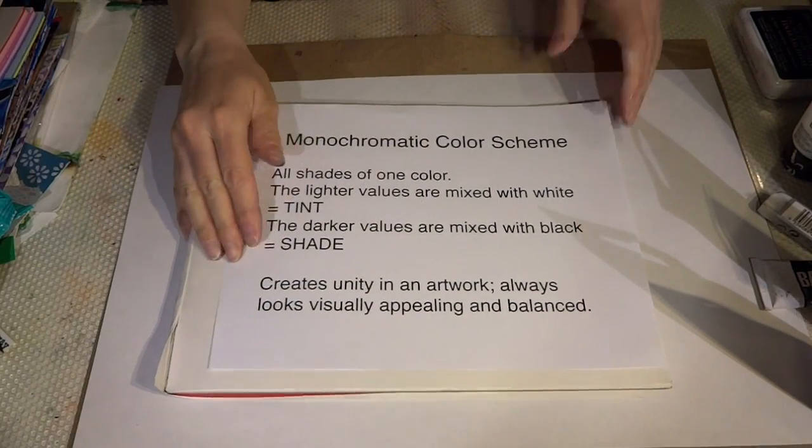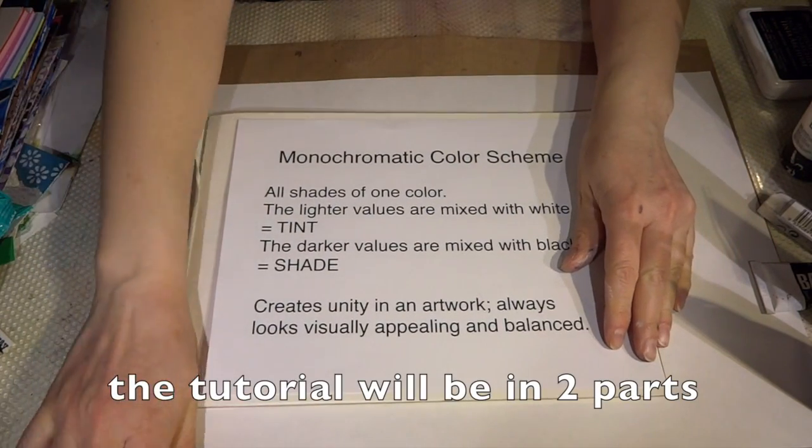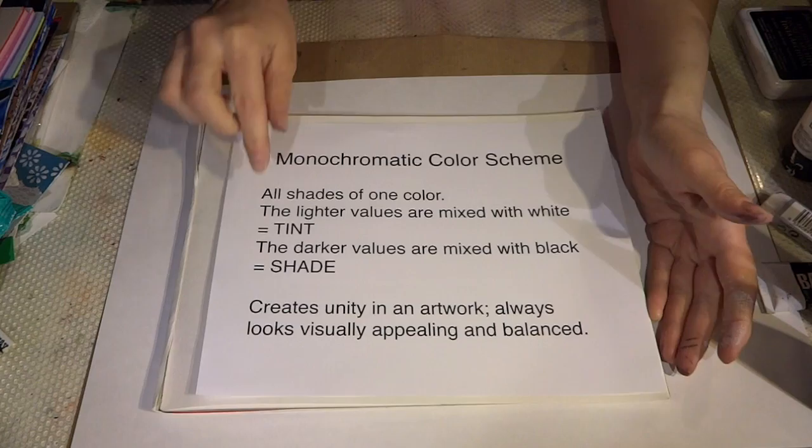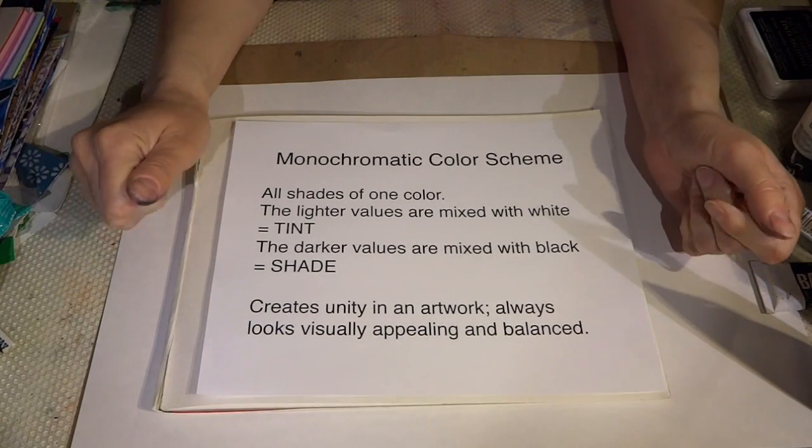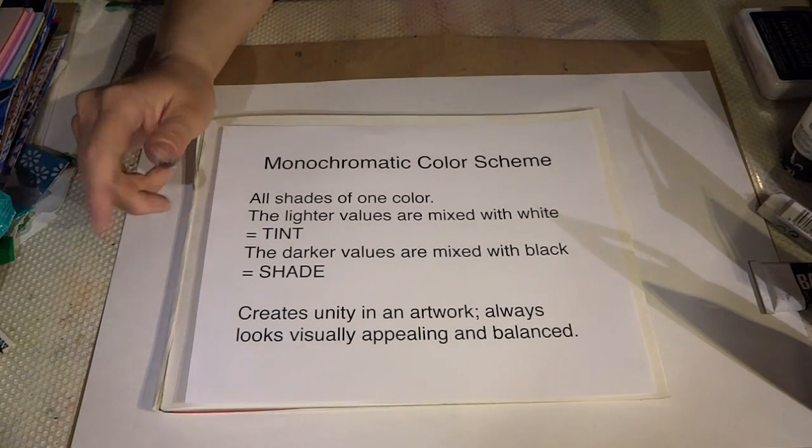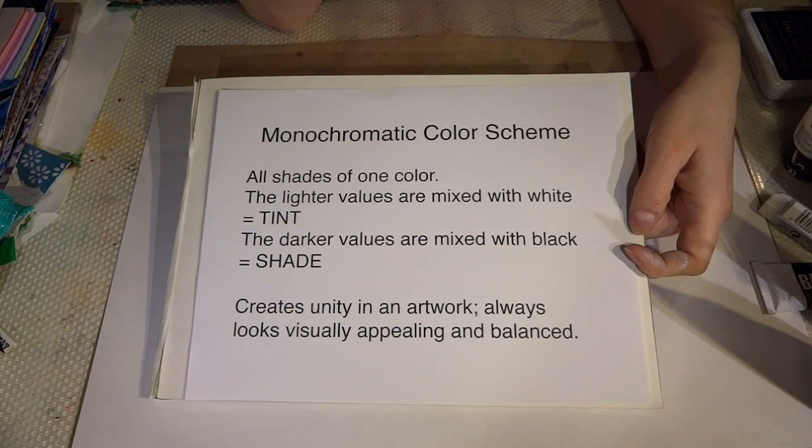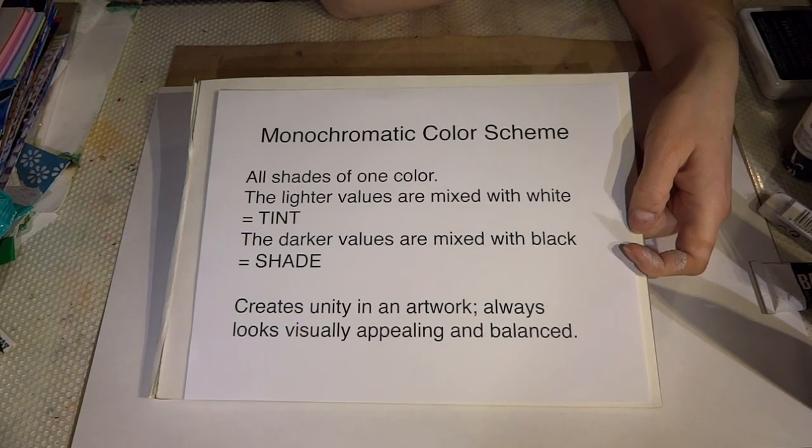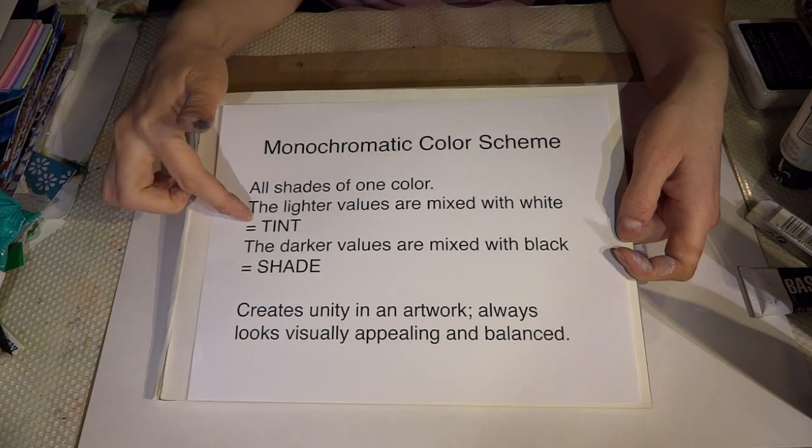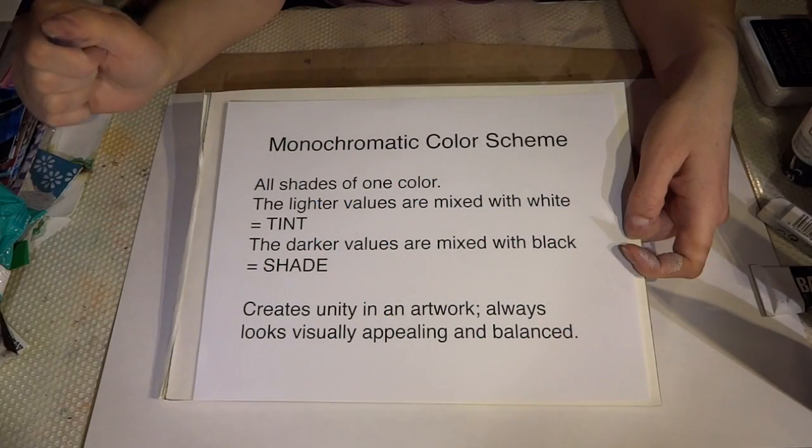Hello everyone, this is Mrs. Wilson. I am going to be doing a quick tutorial on how to create your painting for our color theory unit on monochromatic color scheme or monochromatic color scale. Basically, monochromatic color scheme is all shades of one color. You create a color scale from one color and add to it white to make the colors lighter, that is what we call tint, and then add to it black to make the color darker and that is what we call shade.